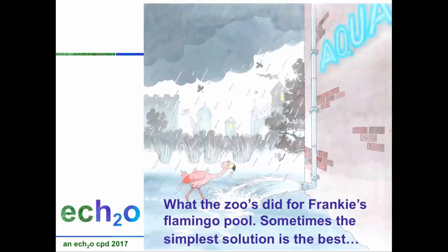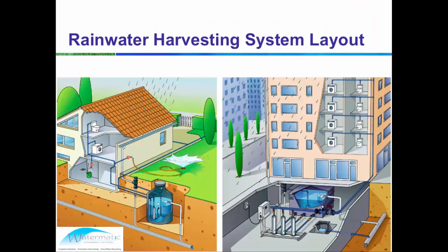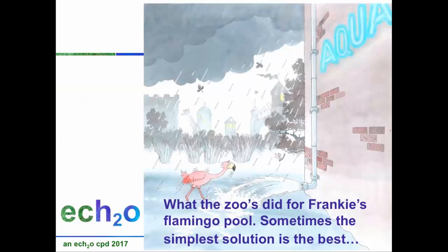My final slide: sometimes you don't have to look for the most complicated solution. This is a real story. Bristol Zoo wanted to do rainwater harvesting and had a complex underground system in mind. A friend of mine who specialises in rainwater went there and said, 'Well, you're bringing it off a building next to the flamingo pool — it'd make much more sense to just run it straight into the flamingo pool, since you're constantly filling it up with mains water anyway.' And that's what they did. And that's why I ended up writing the book.